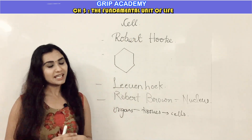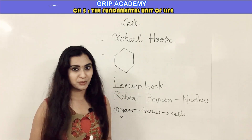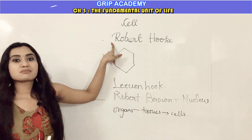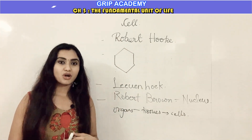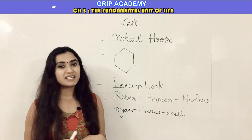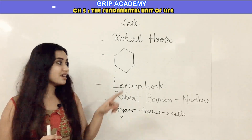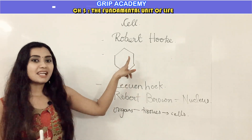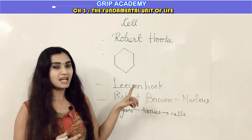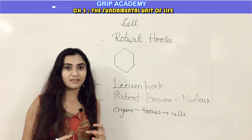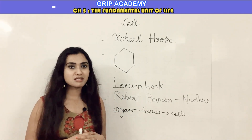Before going into this topic, let me tell you how the name 'cell' was introduced and by whom. It was introduced by scientist Robert Hooke while he was observing a thin slice of cork. He found a structure which resembled a honeycomb, and as it was like compartments, he termed it 'cell,' which basically refers to a compartment.